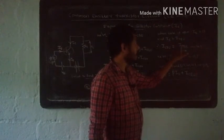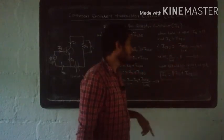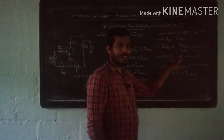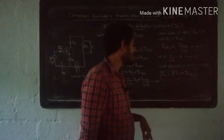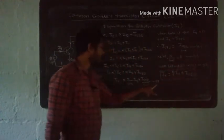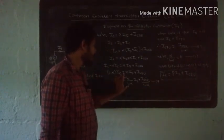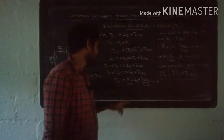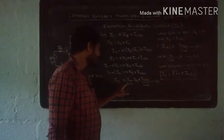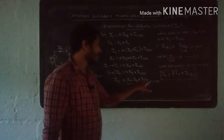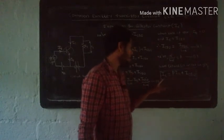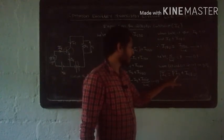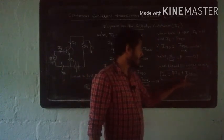Since alpha divided by (1 minus alpha) equals beta, the collector current expression becomes IC equals beta times IB plus ICEO. Here beta is the current amplification factor in Common Emitter transistor configuration, IB is base current, and ICEO is collector-emitter current when base is open.